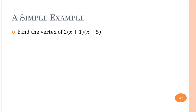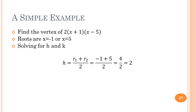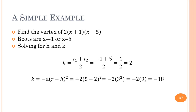For the vertex method in factored form, the axis of symmetry is just the mean of the two roots, and k equals negative a times the offset squared. Let's look at a simple example: find the vertex of 2 times (x plus 1)(x minus 5). The roots are x equals negative 1 and x equals 5. h equals (negative 1 plus 5) divided by 2, which is 4 over 2, or 2. k equals negative 2 times (5 minus 2) squared, which is negative 2 times 9, or negative 18. The vertex is at (2, -18).